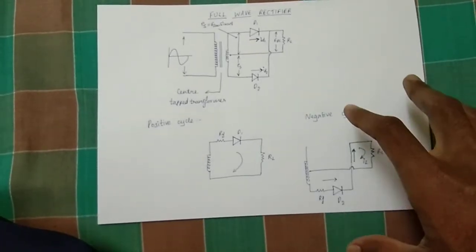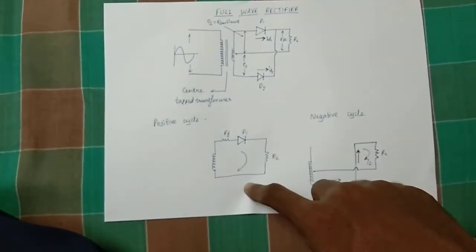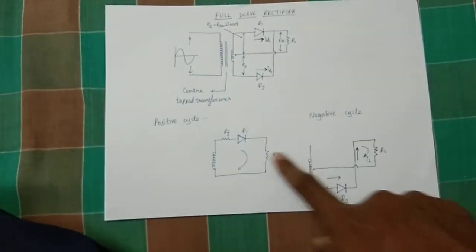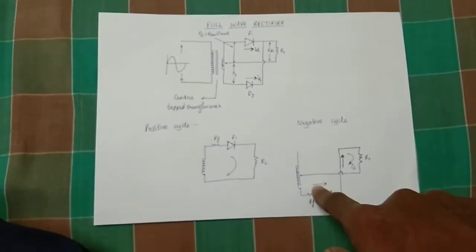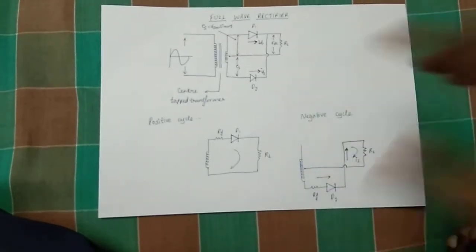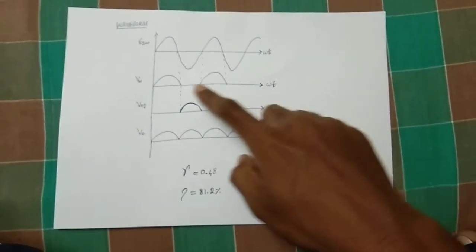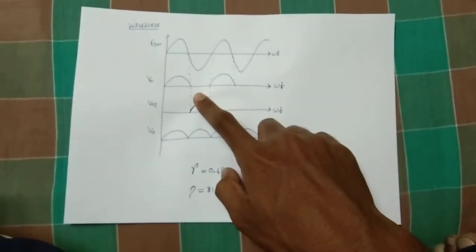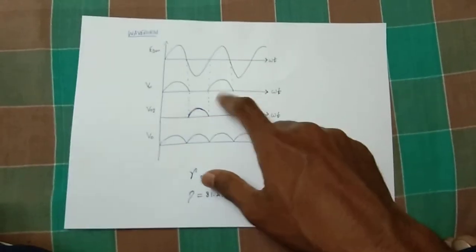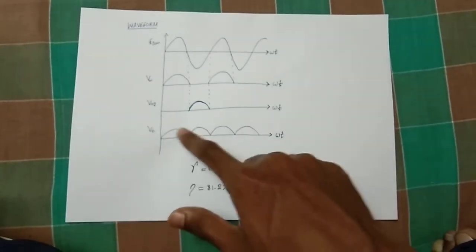Now, this is one of the negative cycles. It is a positive cycle. If you look at the positive cycle and negative cycles, the positive cycle is a positive cycle. This is the first cycle. The negative cycle also passes through. The two are the same. We are going to coordinate the same way from the previous cycle. This is the full-wave rectifier.